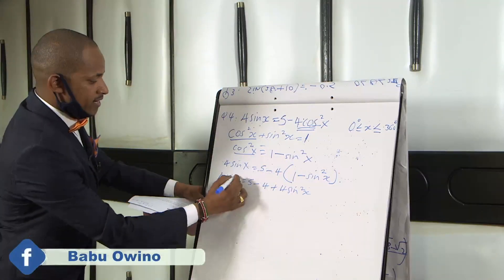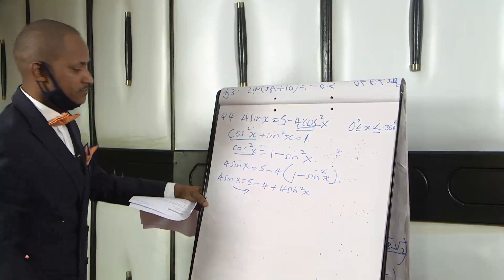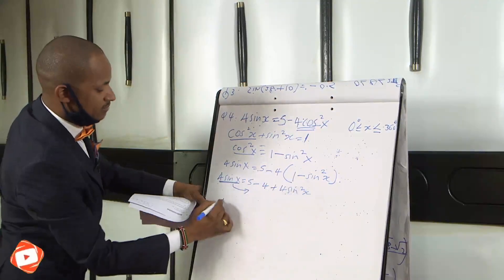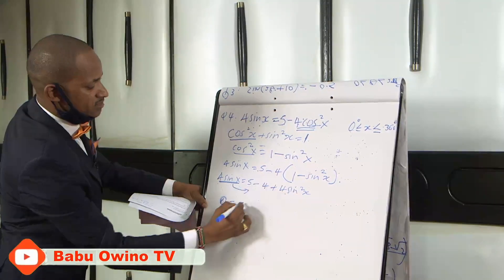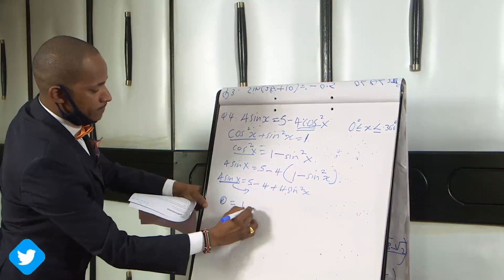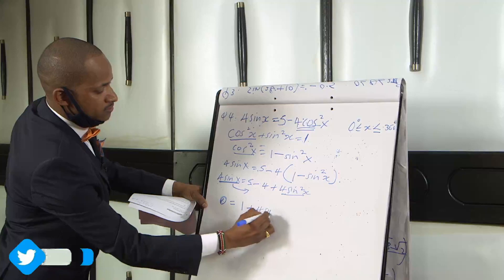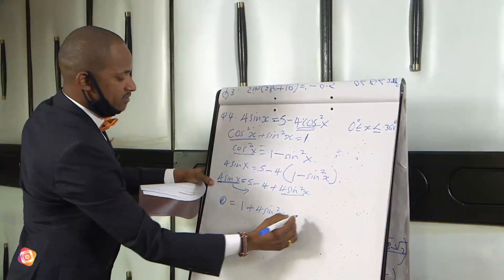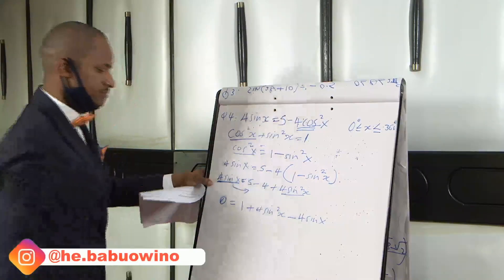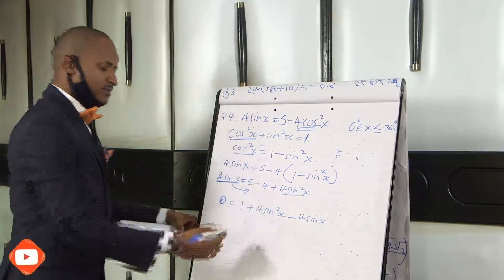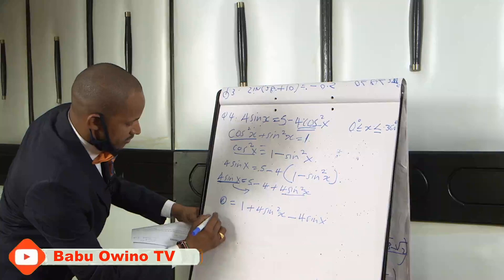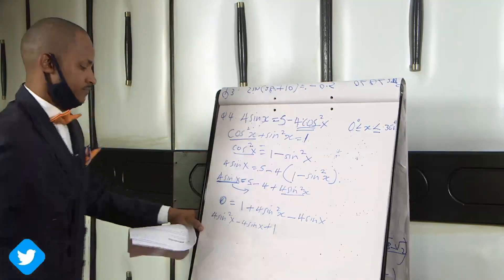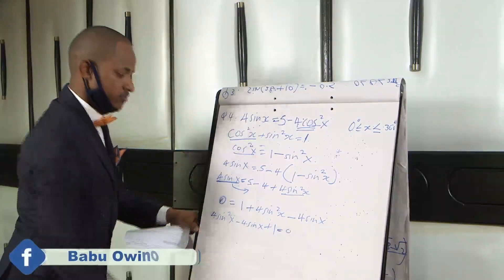We collect the like terms. Bringing 4 sin x to the other side, 5 − 4 = 1, so we get 0 = 1 − 4 sin x + 4 sin²x. Rearranging neatly: 4 sin²x − 4 sin x + 1 = 0.